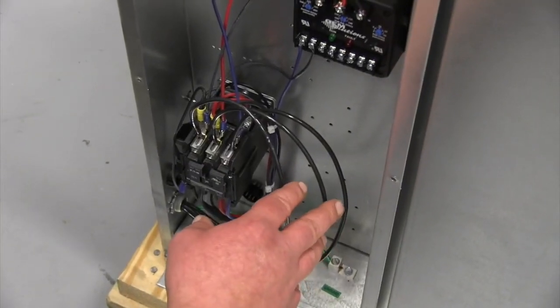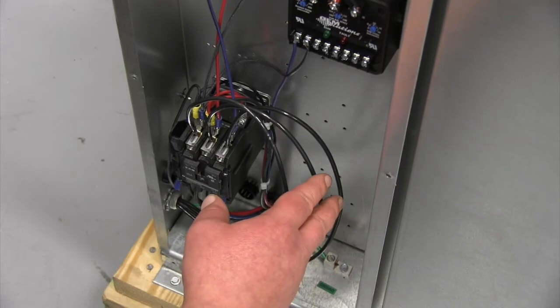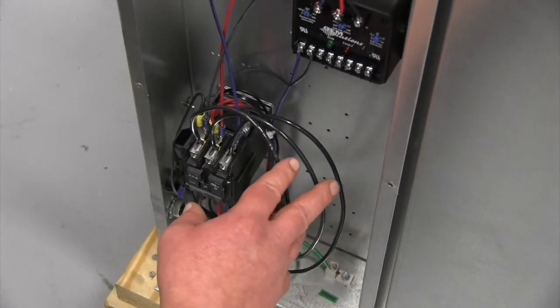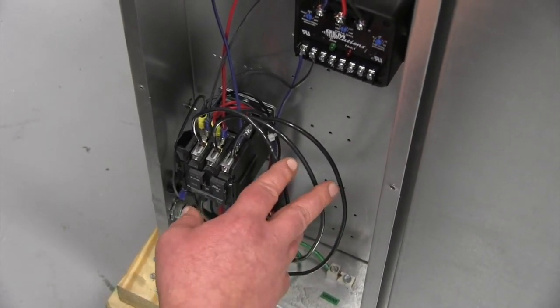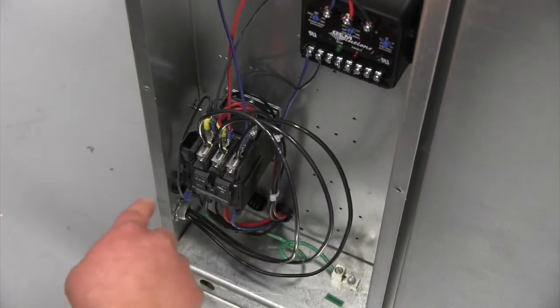Before we apply power to our outdoor condensing unit, we want to make sure that all three phases are connected to the line side of our contactor at the very top.